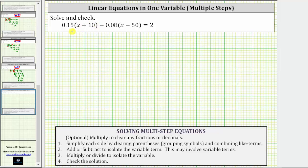We are asked to solve and check the given linear equation in one variable. To solve the equation means to determine the value of the variable that satisfies the equation or makes the equation true. To do this, we must isolate the variable on one side of the equation.